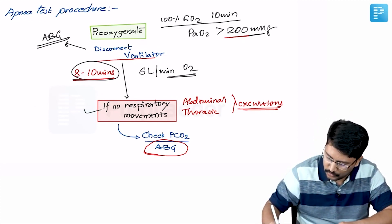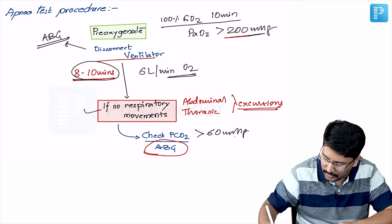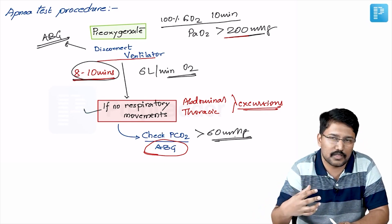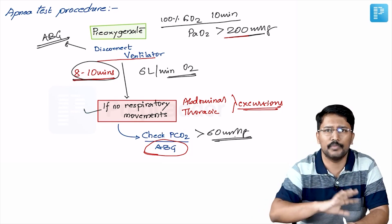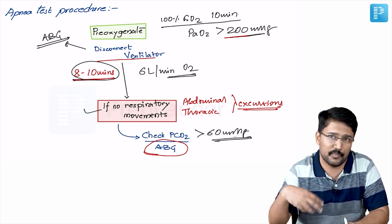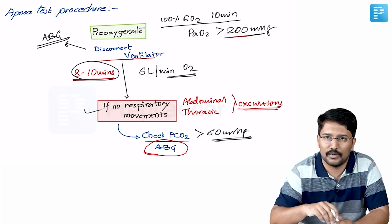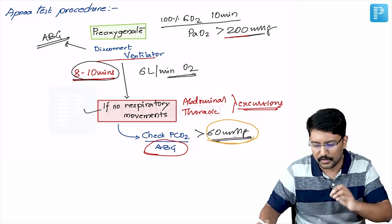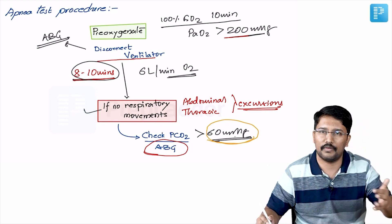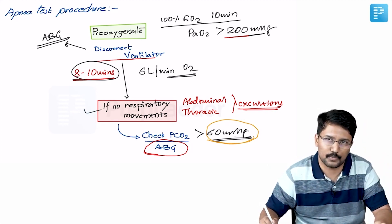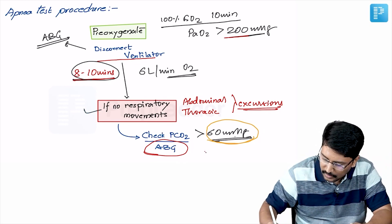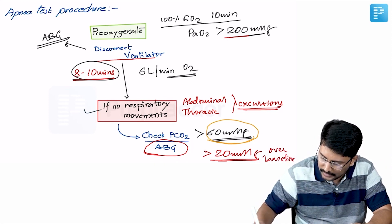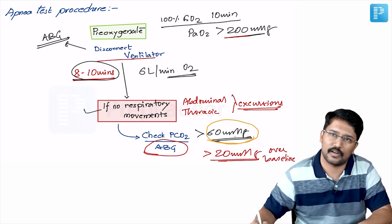If we have achieved a PaCO2 of more than 60 millimeters of mercury, in normal circumstances, this is kind of enough to trigger the respirator center that is there in the brainstem. So that is enough to initiate respiratory movements. If the brain stem is not intact, that means even at this PaCO2 level, the respiratory movements are not going to be triggered. If the PaCO2 of 60 is not achieved, that means your test is invalid. You have to redo the test at a later point of time. But if you have achieved that or if you have at least seen more than 20 millimeters of mercury rise over baseline, then the apnea test is valid and you can rely on the result.